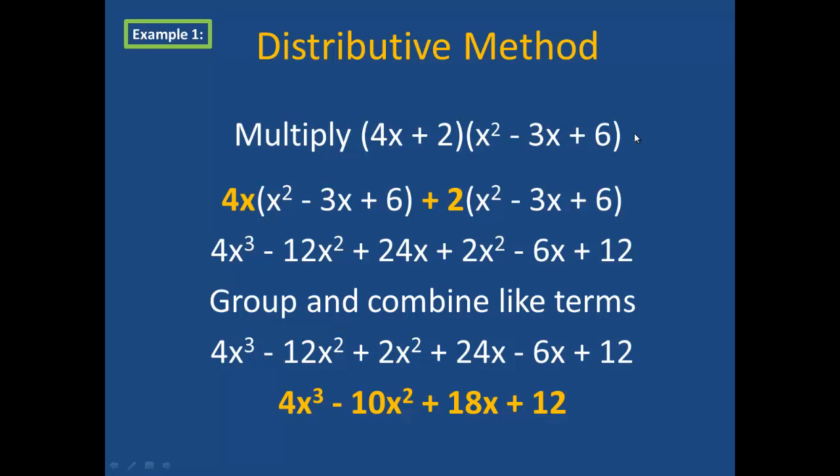Looking up at the original example, you can see that what I did was 4x times the first term, then the second term, and then the third term of the second polynomial. I then took the 2 and multiplied it by each of the three terms, and that's how I got my final product. Please include this example on page 1 of your notes.